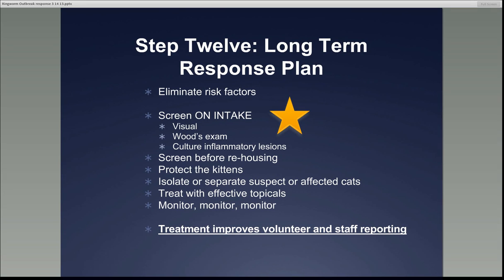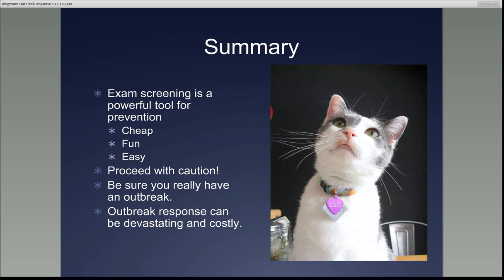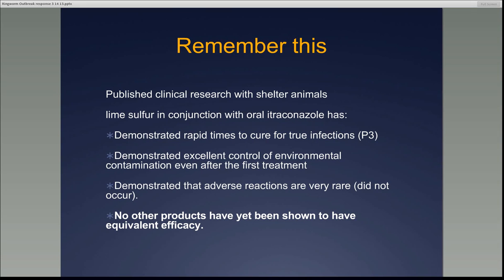Intake quarantine, if you're going to do it, takes two to three weeks — and it's usually not something we recommend unless there's a real important reason. In summary: exam screening is a powerful, cheap, and easy tool for prevention. Proceed with caution if you think there is an outbreak — make sure it really is one. Consider whether the real answer is to just investigate further and find out if you only need to treat a handful of animals. Outbreak response can be devastating and costly, so be careful. Lime sulfur and itraconazole works great and isn't very expensive — a 21-day dosing course usually costs less than $25 to treat a cat.